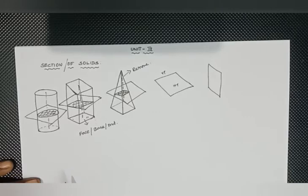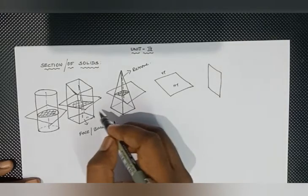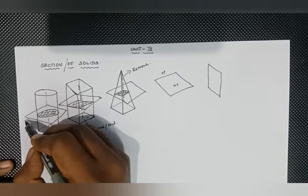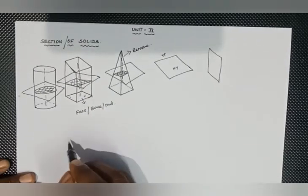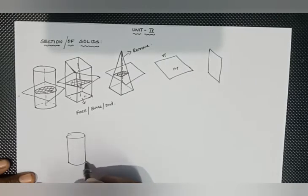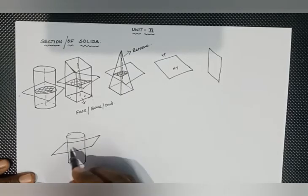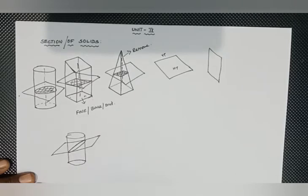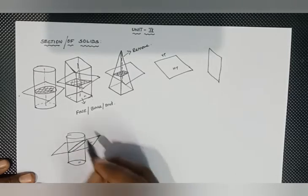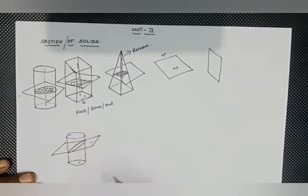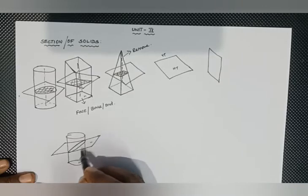If we cut, we get the shape of the cutting portion. Now, if we cut at a circle, and the base is inclined, then if we cut the portion, we get the shape of the bottom. The base and the shape are the same shape. For example, if the cylinder is cut parallel to the base, the cutting section is the same shape — a circle. But if there is an inclination to the base, it will obtain an ellipse.